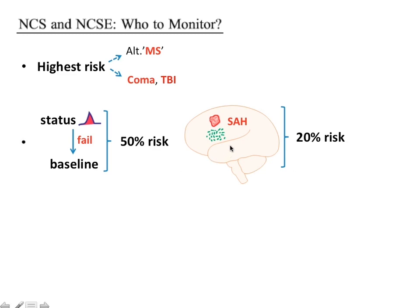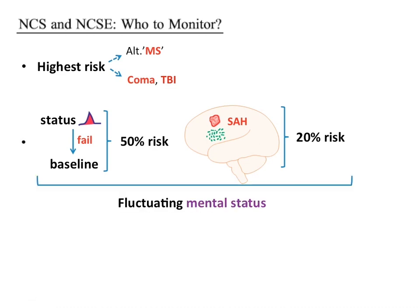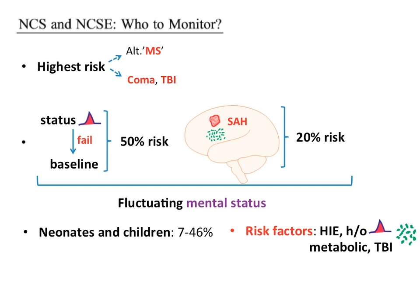Other subgroups at risk for NCS or NCSE include patients with subarachnoid hemorrhage, neuroinfections, or intracranial hemorrhage — 20 percent may develop NCS or NCSE without evident seizures. Any patient with these conditions plus fluctuating mental status should raise concern. In neonates and children, 7 to 46 percent are at risk for underlying NCS, with risk factors including anoxia, hypoxia, history of seizures, infections, metabolic abnormalities, or TBI.